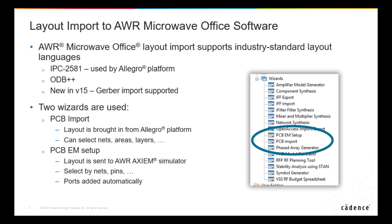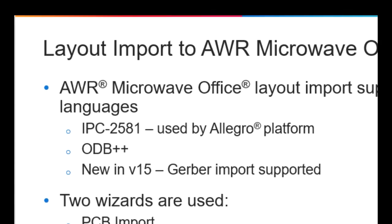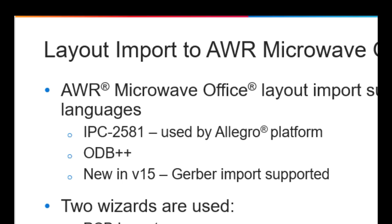Now let's talk about boards and packages. At Cadence, our layout tool for that is Allegro. The way we get Axiom to work with Allegro right now is through IPC 2581 layout export: you export the parts of the layout you need from Allegro in that format and bring it into the Microwave Office environment to simulate. We also support ODB++, another similar layout language. New in V15, we now also support Gerber import — many customers have always wanted this. We could always output Gerber, but now you can import it directly.